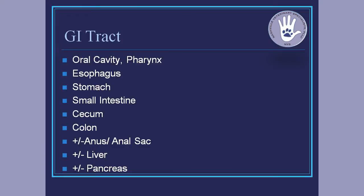When we start talking about the GI tract, there are a lot of components to it. The big ones we'll hit on tonight are going to include the oral cavity, the esophagus, stomach, small intestine, and then our large intestine which is going to be made up by the cecum and the colon. If you're really trying to make an all-inclusive list, things like the anus, anal sac, liver, and pancreas could all be included in the digestive tract. But the ones in red are what we're going to hit on, and we're going to start at the top and work our way to the bottom.